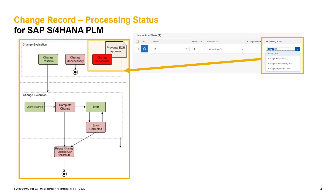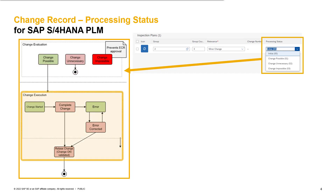In case the processing status of change impossible is set, the system does not allow us to push the change record for approval. With a processing status of change possible or change unnecessary, we can push the change evaluation into a change execution and can then set the processing statuses of change started, change completed, error, error corrected, and change released. The connection between the different processing statuses is shown in the diagram.